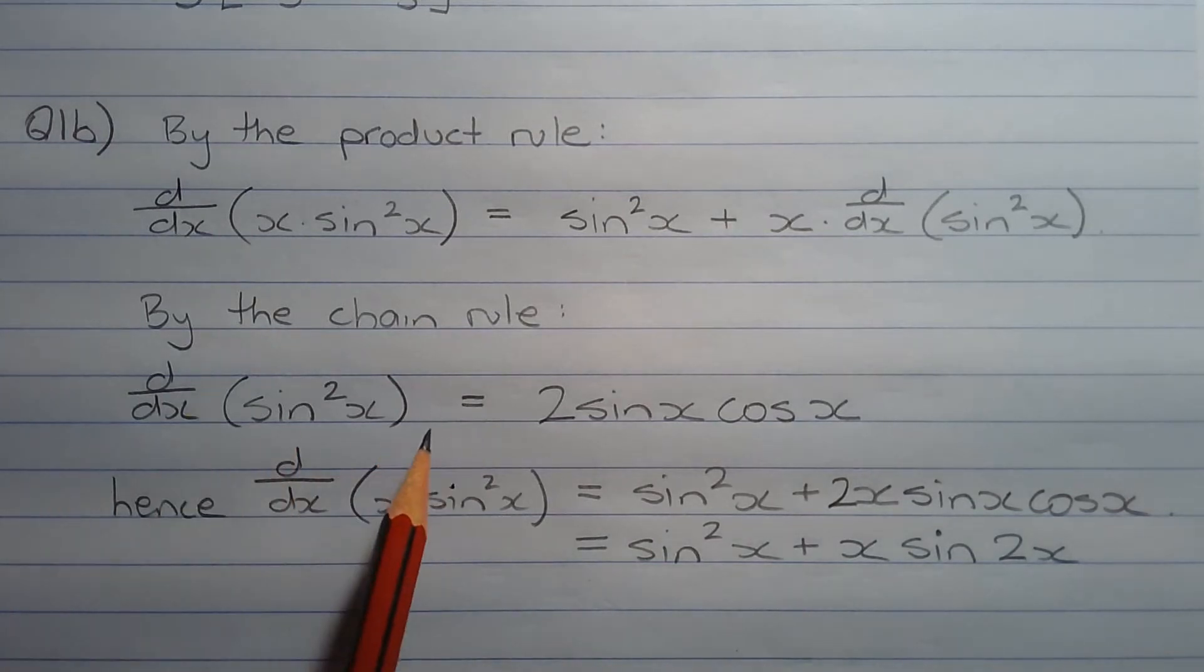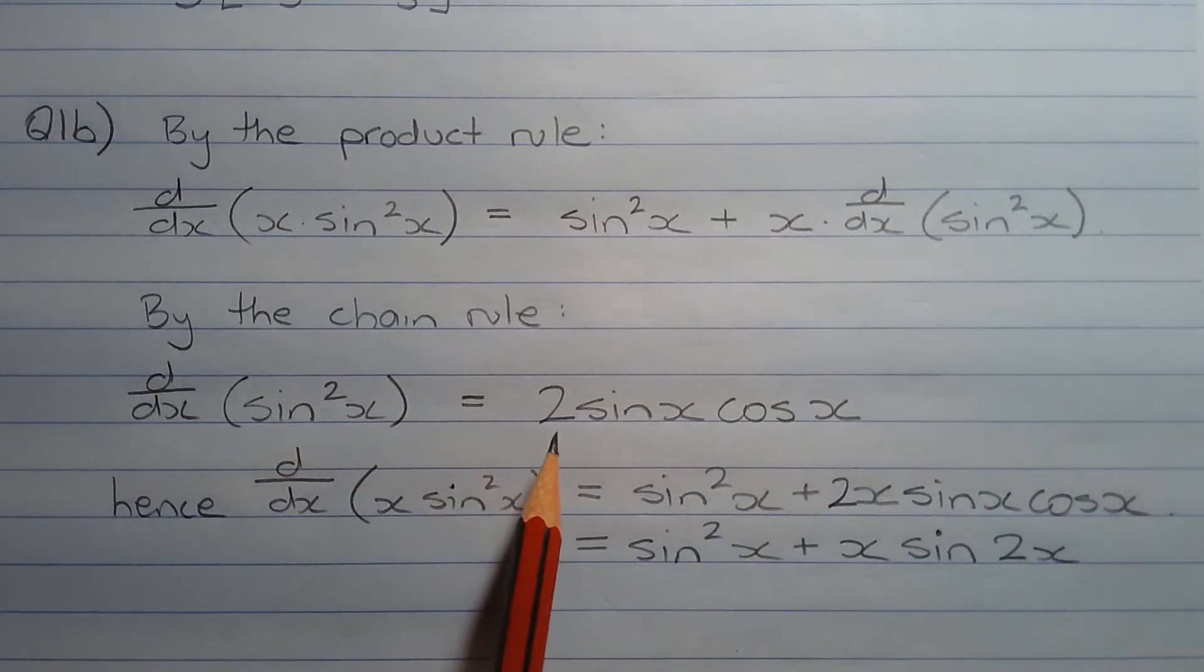So applying the chain rule, we have two sine x multiplied by the derivative of sine x, which is cos x. So we get two sine x cos x.